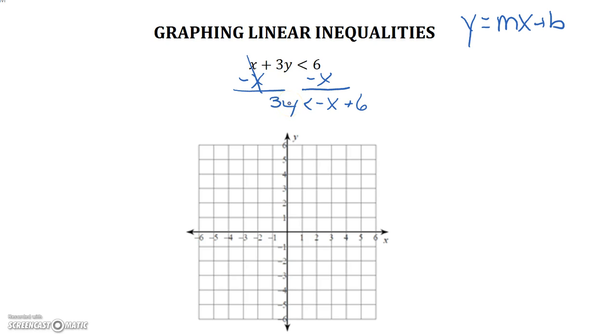Alright, the y is not by itself yet. It's being multiplied by 3, so we're dividing everything by 3. We're left with y is less than negative 1 third x plus 2. This is the inequality we are working with. And we did not divide or multiply by a negative number, so that's why our inequality stayed less than.